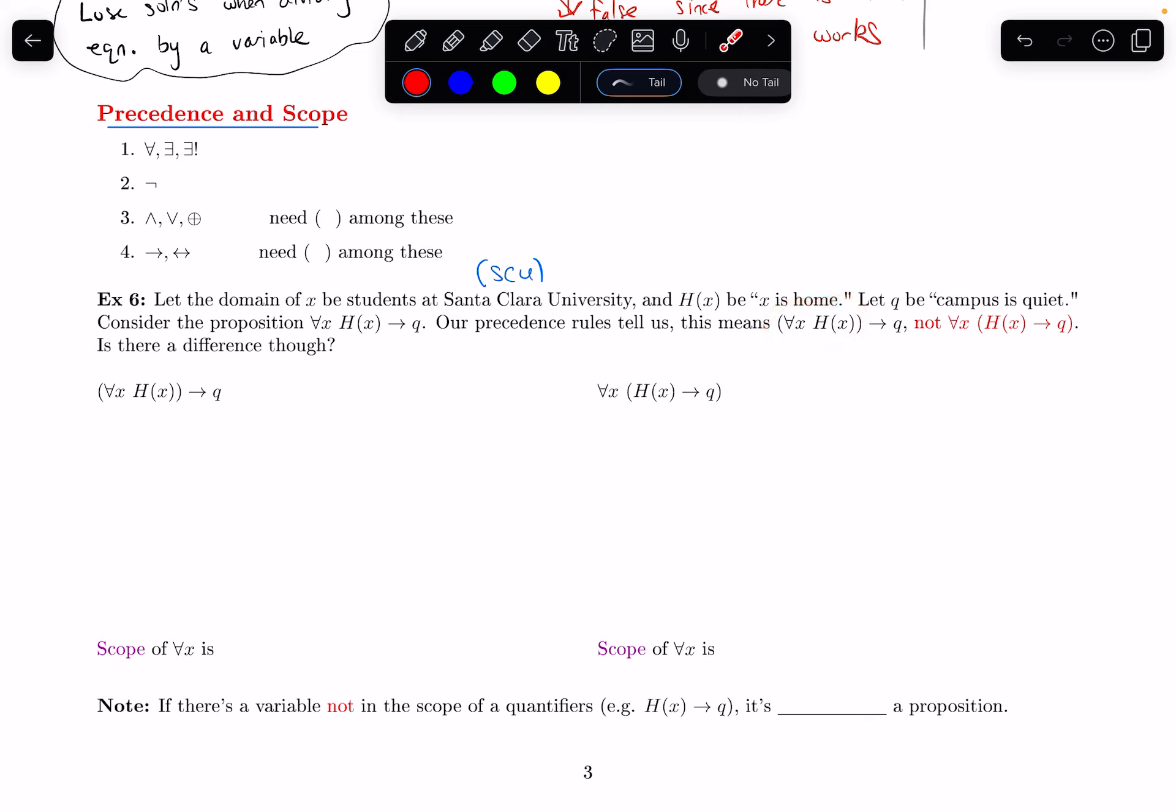And after I do that, then the implies Q happens. So notice this is not the same as dealing with the implies first, because I could think of that as putting a parentheses around the implication and doing that first and then doing the for all second.